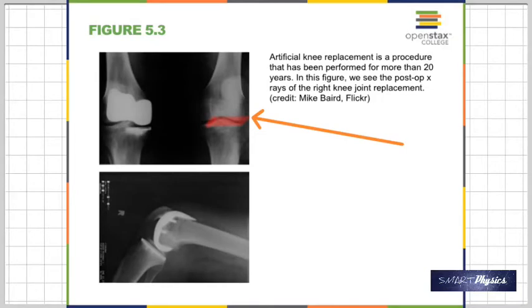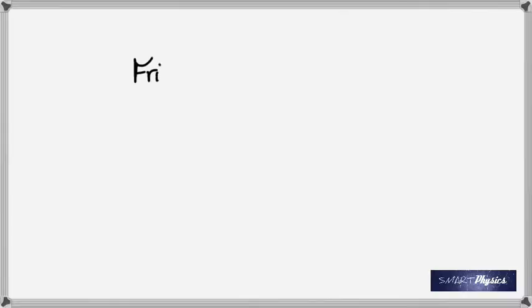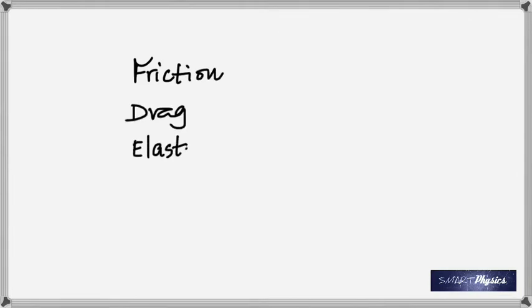Have you heard of ball bearings? Which friction is greater — sliding or rolling? Sliding friction is greater. So if you use ball bearings — tiny steel balls — you are changing sliding into rolling, and that is how friction can be reduced. So friction, drag, and elasticity are the three topics in this chapter.